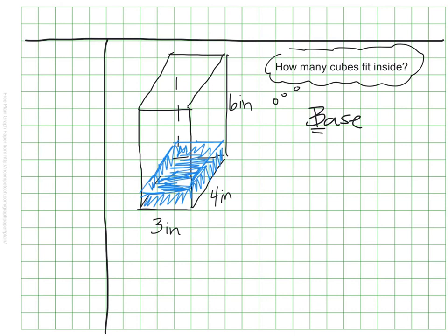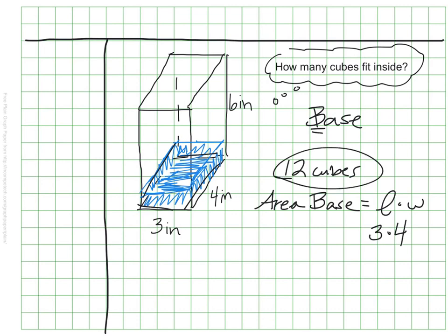If I were to cover this entire bottom layer with cubes, I would be able to fit 12 cubes along the bottom. And I can figure that out by essentially finding the area of the bottom of my figure. So I'm going to find the area of this big base, the whole bottom of my 3D shape. I'm going to do that in this case by multiplying my length times my width, or 3 times 4. So I find out that there are 12 cubes here.